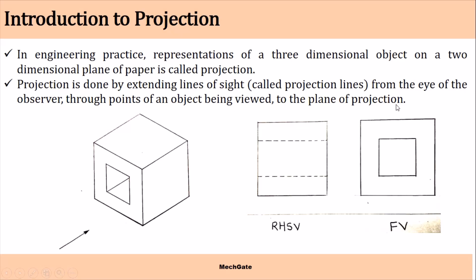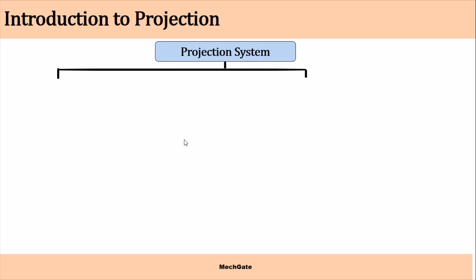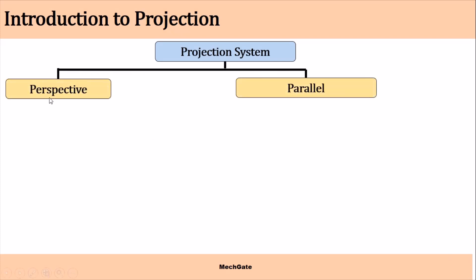We can find any projection by extending the projection line from the eye of the observer and through points of an object being viewed. There are basically two types of projection system: a perspective projection system and a parallel projection system.